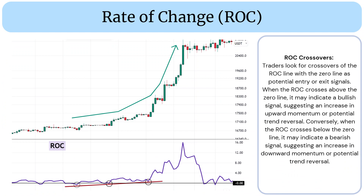Another strategy involves ROC crossovers. Traders look for crossovers of the ROC line with the zero line as potential entry or exit signals. When the ROC crosses above the zero line, it may indicate a bullish signal suggesting an increase in upward momentum or potential trend reversal. Conversely, when the ROC crosses below the zero line, it may indicate a bearish signal suggesting an increase in downward momentum or potential trend reversal.